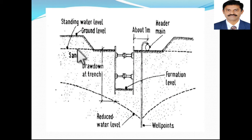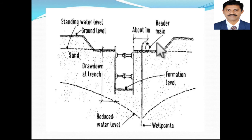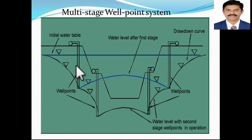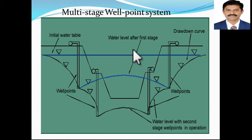The well point system works as follows: there is standing water initially at the excavation. When the well is drilled into the ground and water is pumped out, the standing water level comes down automatically. There are several such well points on a site, and this is called a multi-stage well point system. Initially only some wells may be available and the water table comes down to a certain level; then another set of wells is constructed, allowing further excavation for the construction activity.